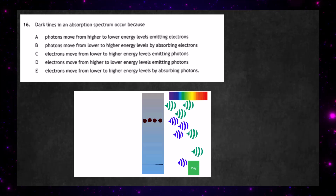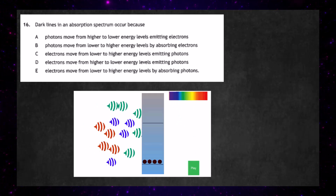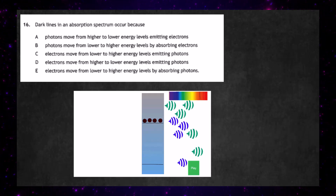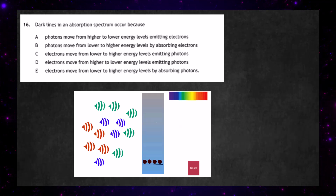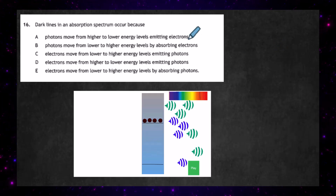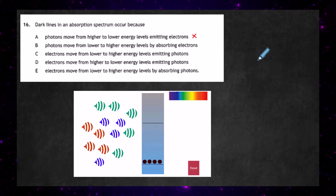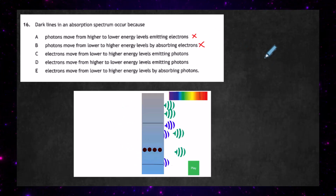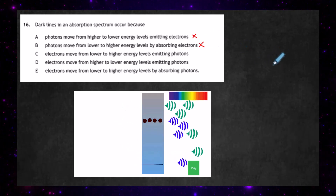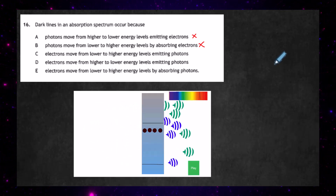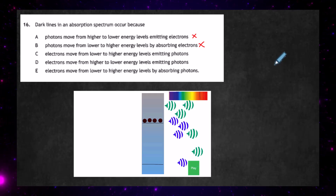So what we're looking for is: electrons absorb the photons and move from a lower energy level to a higher energy level. Let's check the statements. Statement A — photons move from higher to lower energy levels emitting electrons — is wrong. Statement B is also wrong. Statement C — electrons move from lower to higher energy levels emitting photons — no, the electrons do move from lower to higher but they actually absorb the photons, so that one is wrong.